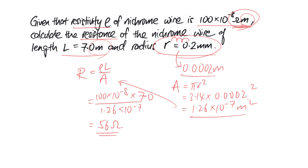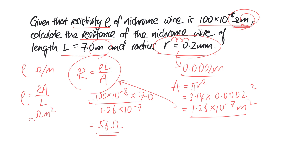One thing to highlight is: what if the question asks you to find the resistivity? One careless mistake students make is giving the resistivity units as ohms per meter because they can't remember. Just to remind you — since you know the formula, you can make rho the subject: rho equals R times A over L. Then replace each physical quantity with its SI unit: resistance is ohms, area is meters squared, divided by length in meters, and you can cancel off. That will help you remember that resistivity is ohm meters.